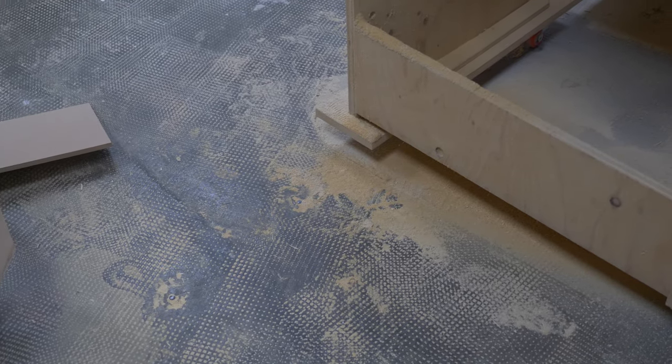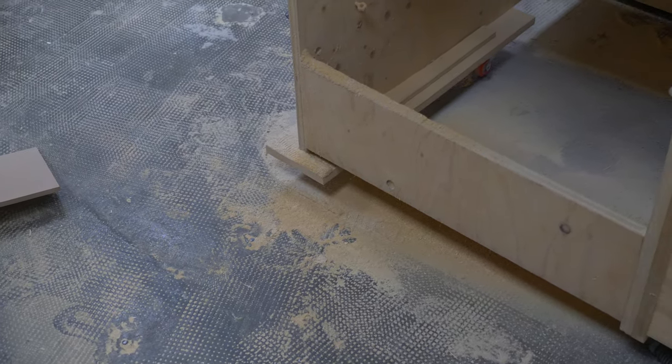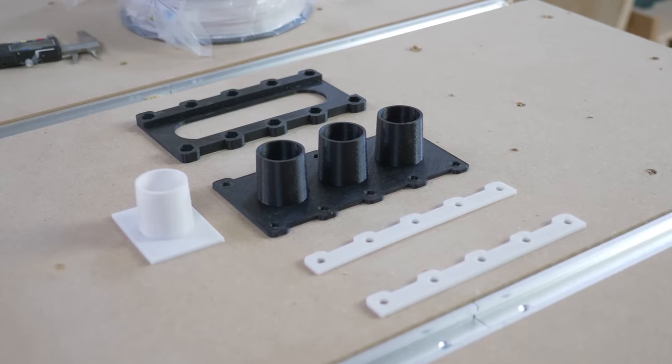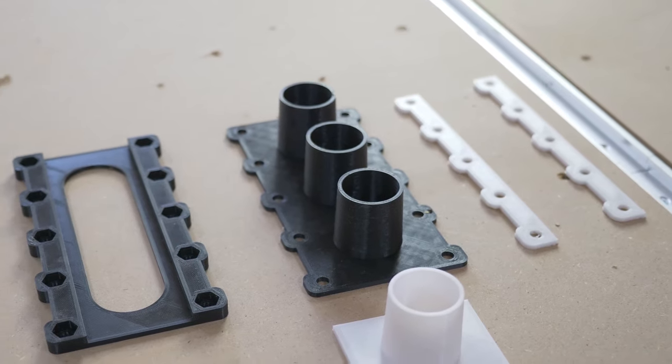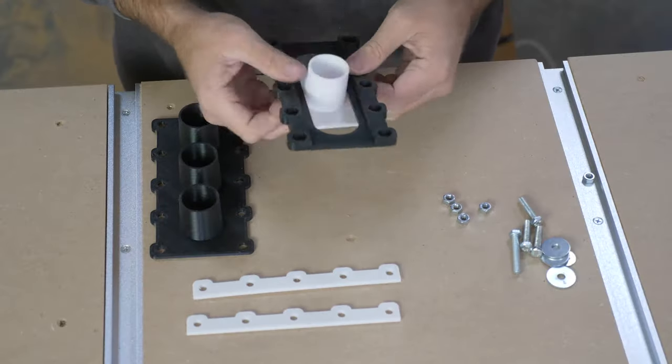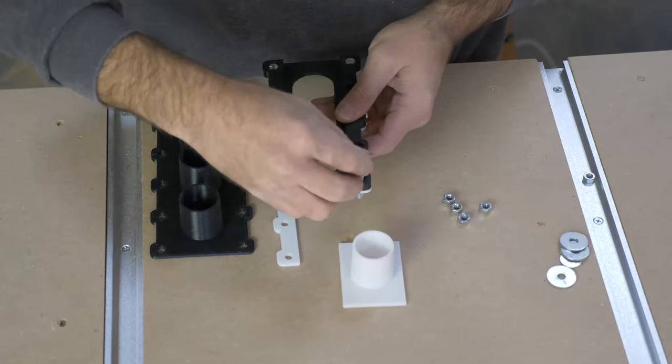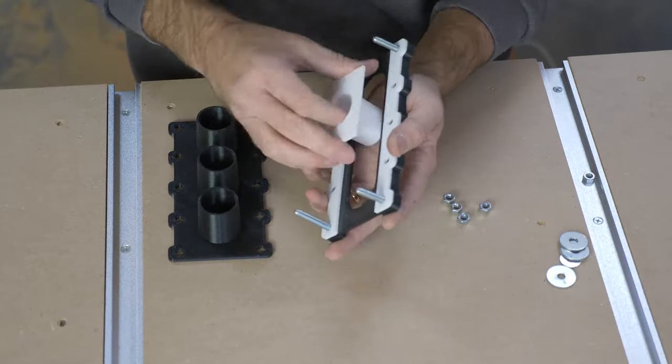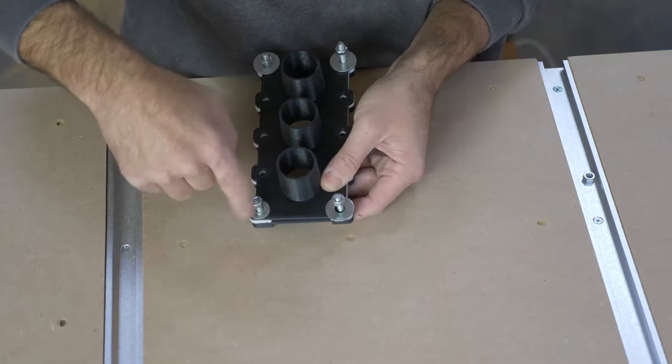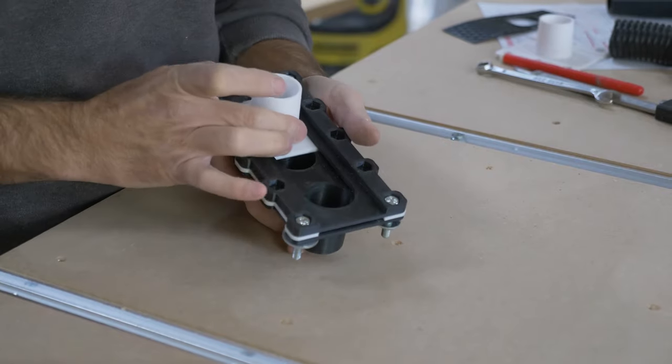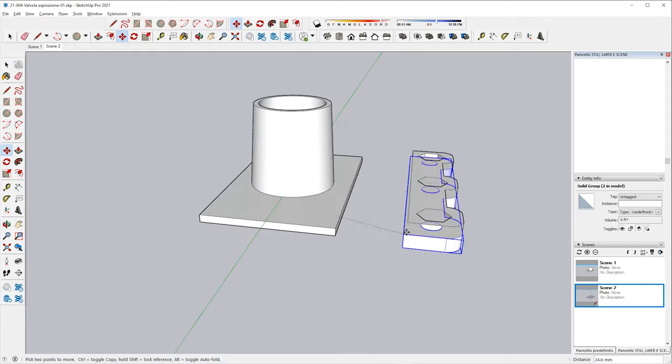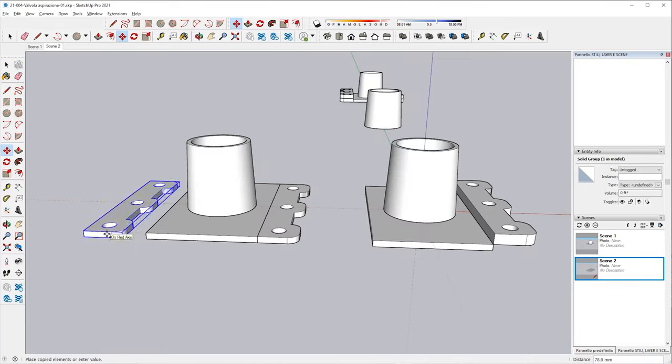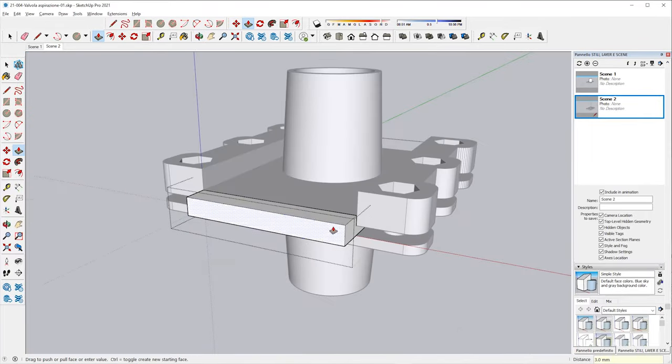Dust is a big problem in every workshop, especially at a table saw and router table station. That's why I decided to make my dust collection system more efficient by creating a three-way system controlled by a selector. All components have been designed and 3D printed. You can find the files and the link above in the description of the video.